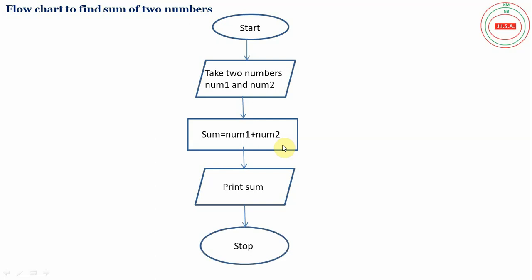Let's see this flowchart with an example. Suppose we take two numbers, num1 with value 20 and num2 with value 30. So we do the process sum equal to 20 plus 30. So sum equal to 50. We will print 50.